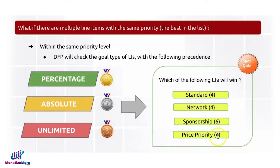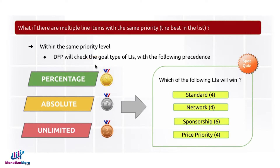In this scenario, we have standard, network, and price priority — three different line item types but with the same priority level, which is four. The way Ad Manager orders it is: it will take the percentage-based line item types first, then go to the absolute line item type, and lastly unlimited.